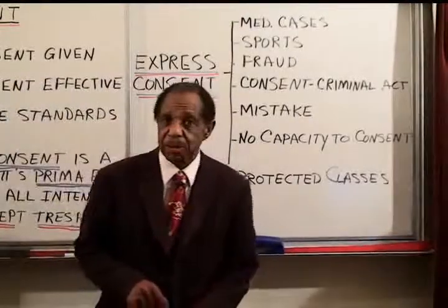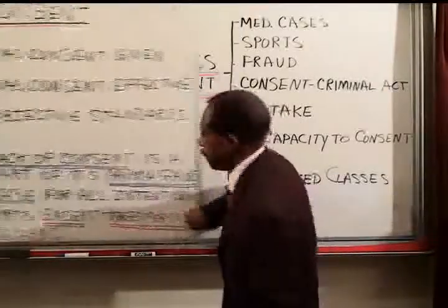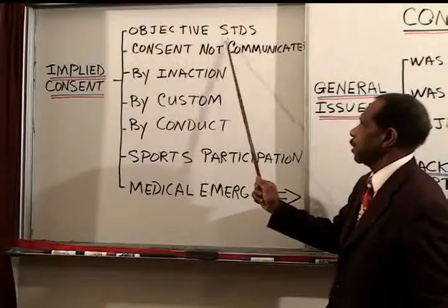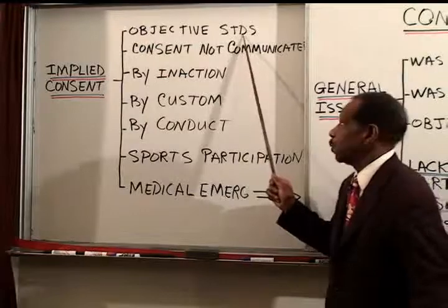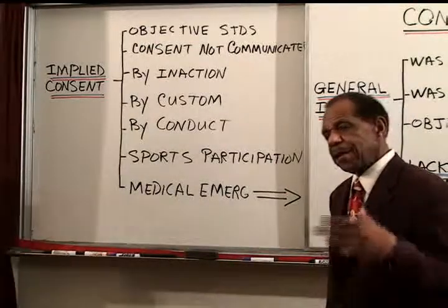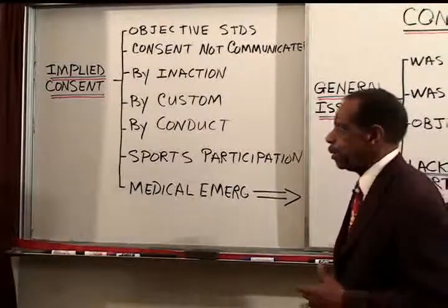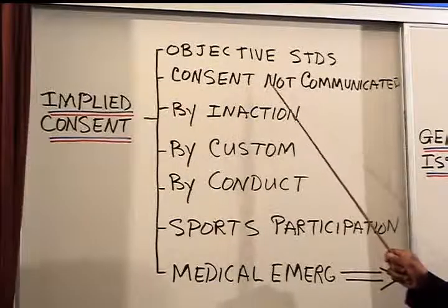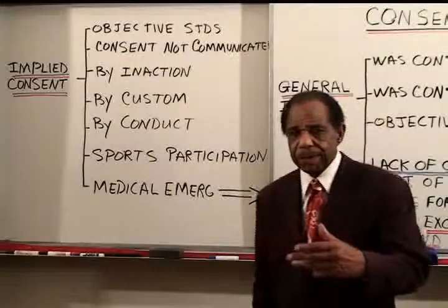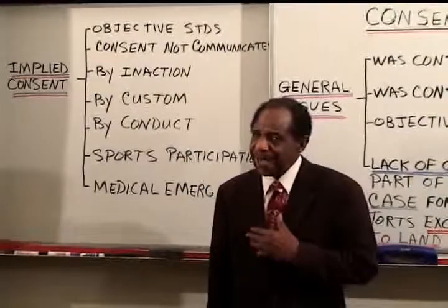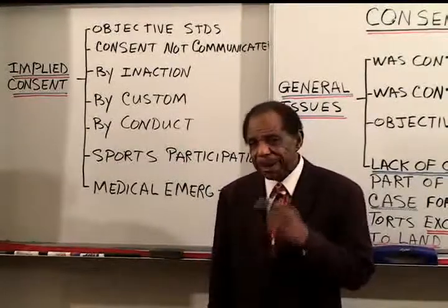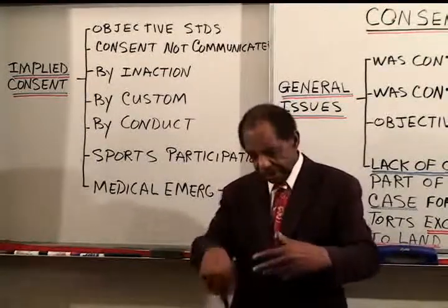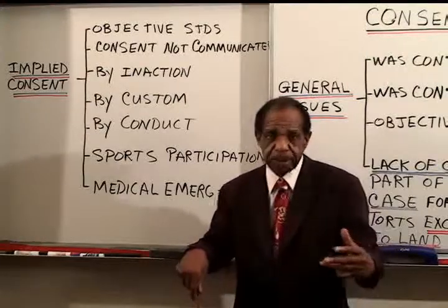Let's now look at the issues that come up with implied consent. First, we use objective standards. This means we ask: would a reasonable person in the position of this defendant have believed that he or she had consent to contact or to whatever it was? Please notice that even if the consent is not communicated to the actor — that is to say, if I have subjectively consented to someone touching me but haven't told them — and they touch me without knowing that, they have not violated my space because I had subjectively consented.